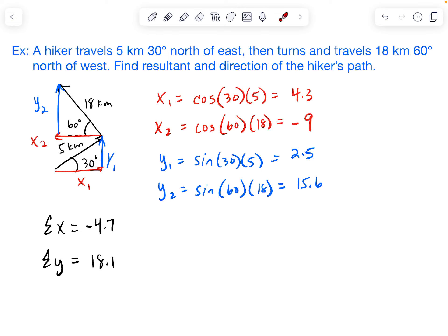And then these are important because what we're going to do is we're basically going to make another right triangle so that we can solve for the resultant and the direction. So negative 4.7, that just means that my vector is going to go left.